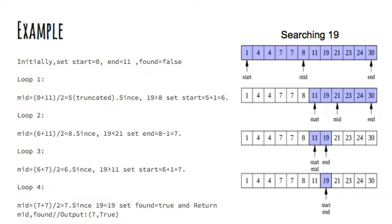Now let's move on to the loop 2. Here mid value will be 8. Since 19 is less than 21 so drop the last half. Now set the end equal to 8 minus 1 which will be 7. Now in this loop 3 mid value will be 6 and as 19 is greater than 11 we will drop the first half. Now set the start equal to 6 plus 1 equal to 7.